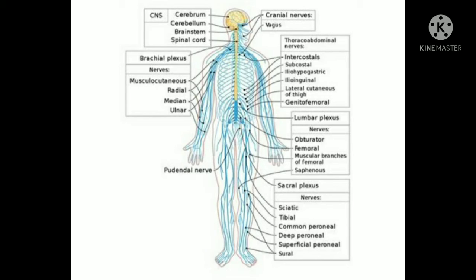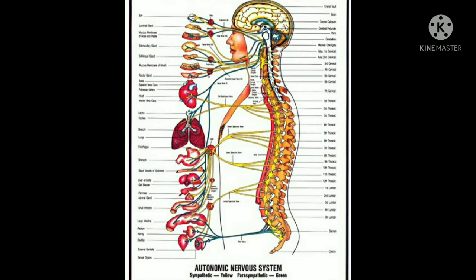There are 31 pairs of spinal nerves. Each spinal nerve has a dorsal sensory root and a ventral motor root. The direction of impulse: the dorsal spinal root carries impulses towards the spinal cord, and the ventral spinal root carries impulses away from the spinal cord.